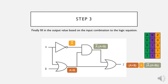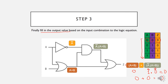In the final step we fill in the output values based on each input combination and the logic equation. For example, when A is zero and B is zero: A OR B becomes zero, and A-bar equals one. One AND zero becomes zero, and zero OR zero equals zero — so the output Z is zero. You have to repeat this process for all rows. Based on this process, we arrive at the complete output values for each input combination.